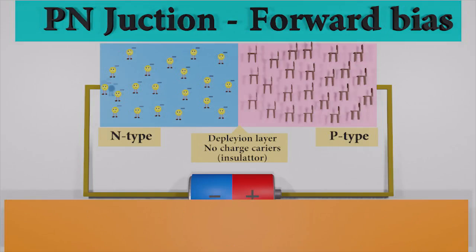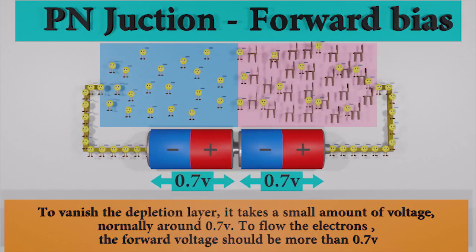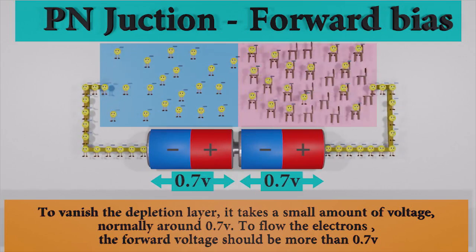There is an important fact that we should keep in mind. To vanish the depletion layer, it takes a small amount of voltage, normally around 0.7 volts. To flow the electrons, the forward voltage should be more than 0.7 volts.